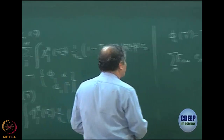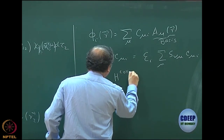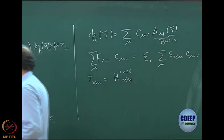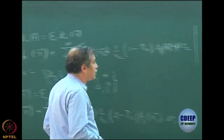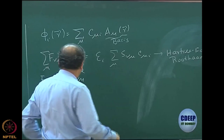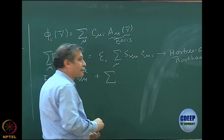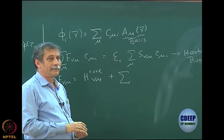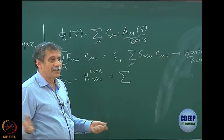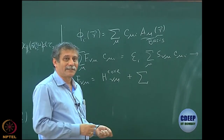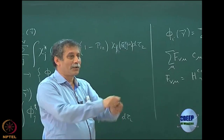Then we gave you an expression for F_mu-nu in terms of the matrix elements of H, which we call H-core_mu-nu — that is the matrix element of H in the basis of a_mu, so H-core_mu-nu. There are several expressions you can write in terms of coefficients and the density matrix. You should be able to derive one from the other — I can ask you to derive any one of them.